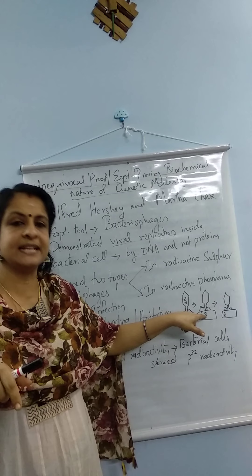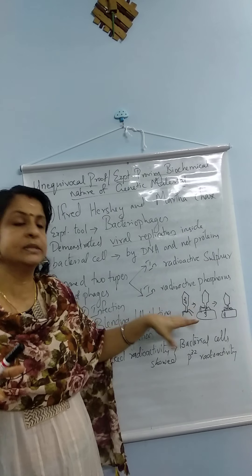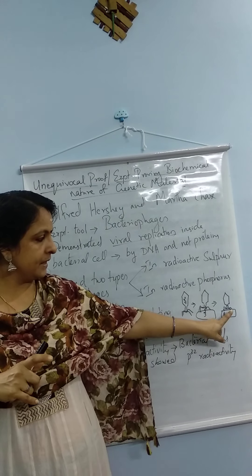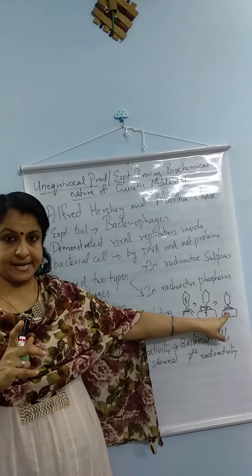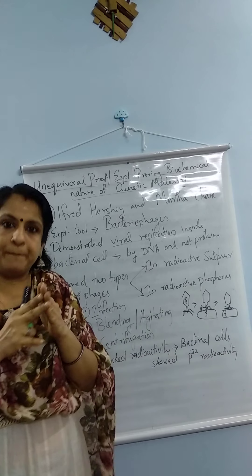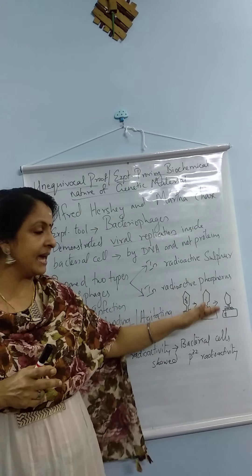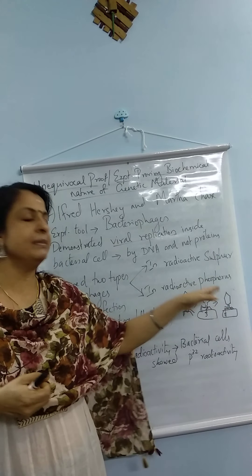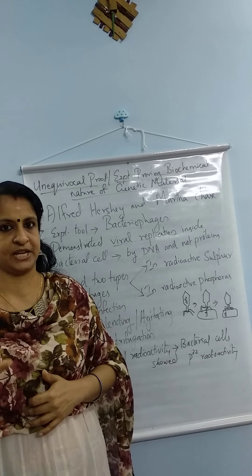When the bacteriophage infects the bacteria, its genetic material — whether protein or DNA — is injected inside the bacterial cell, but the protein coat remains outside the bacterial cell. So the viral genetic material is inside the bacterial cell while the protein coat is outside. The next step was agitation or blending, done to separate the protein coat from the bacterial cell.